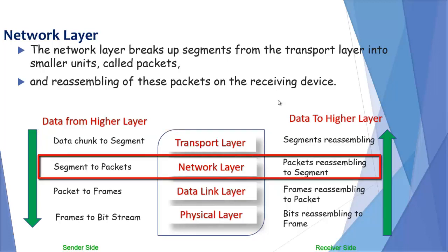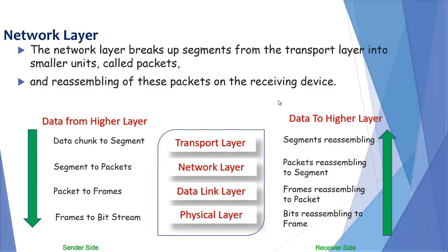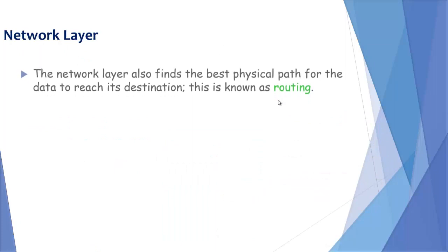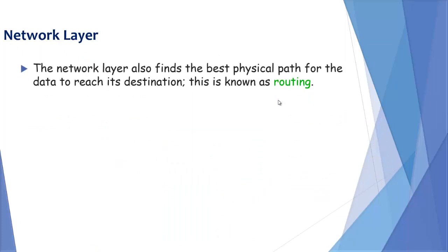While at the receiver side, packets are again reassembled to segments and these segments are reassembled to data chunks at transport. Network layer also finds the best physical path for the data to reach its destination, and this process is known as routing.